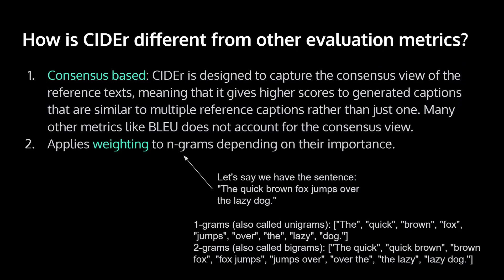So let's first talk about how CIDEr metric is different from other evaluation metrics. First, and most importantly, is that it is consensus-based. CIDEr is designed to capture the consensus view of the reference text, which means that it gives higher scores to generated captions that are similar to multiple reference captions, rather than just one.